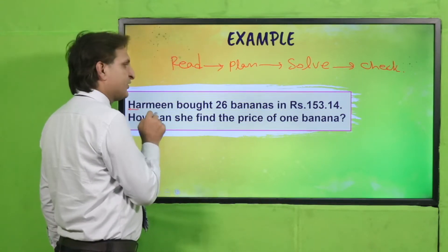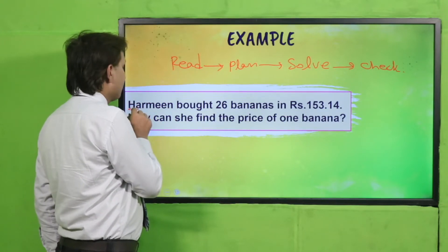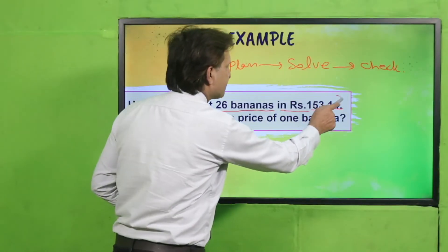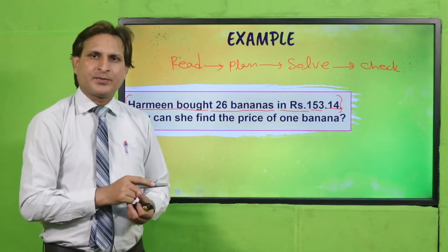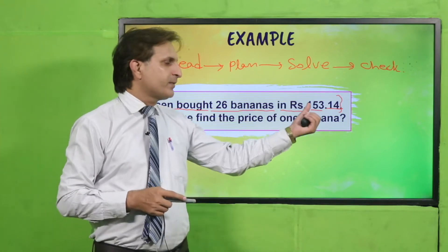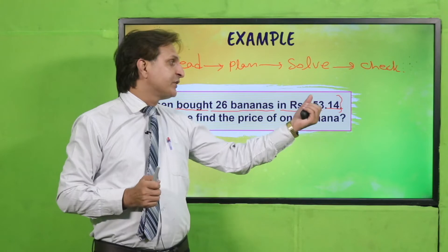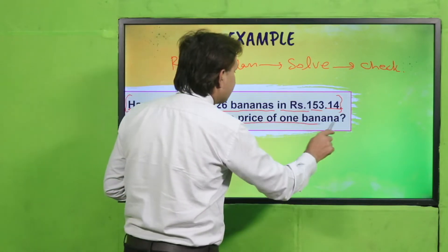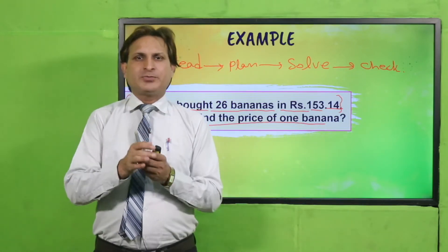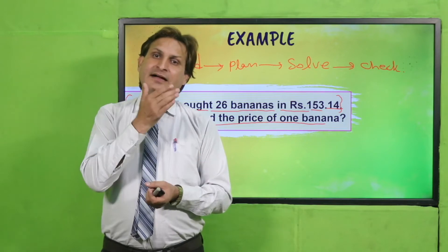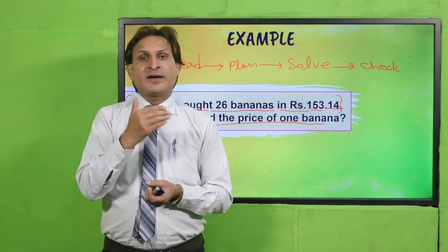Statement ko gaur se padhen aur different parts mein divide kar lein. Hermine bought 26 bananas for rupees 153.14. Yahan tak aapke paas first part complete ho jaata hai. Hermine ne 26 bananas 153.14 rupees mein purchase kiye. Ab find karna hai: how can she find the price of one banana? Maximum bananas ki price given hai, one banana ki find karni hai.